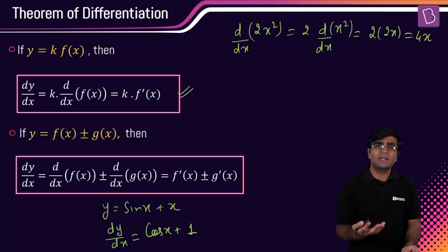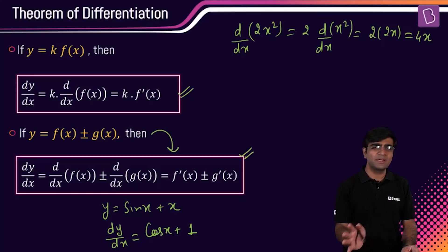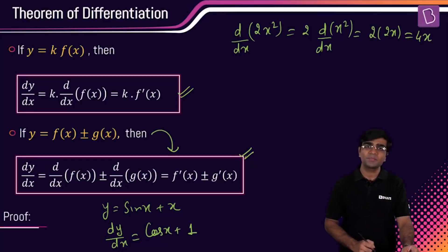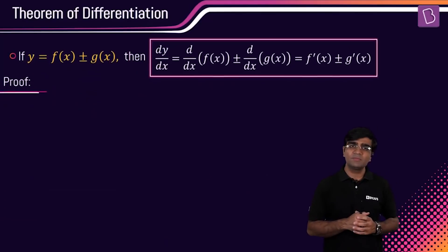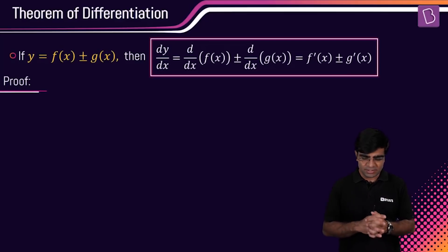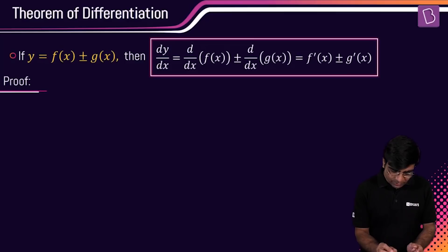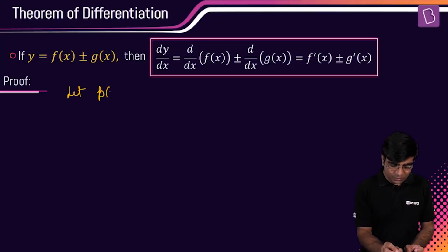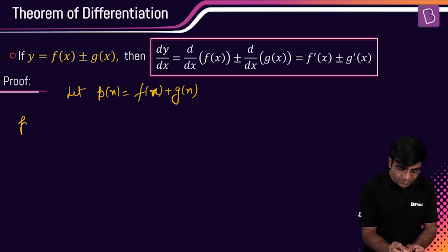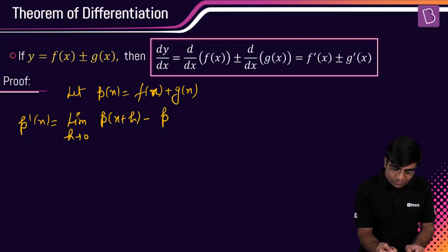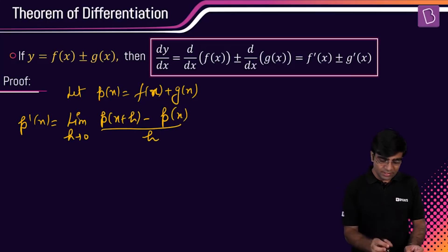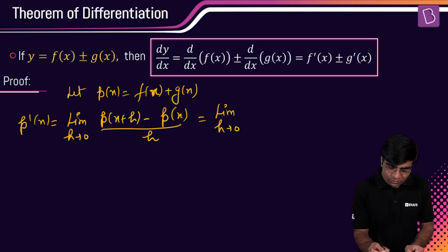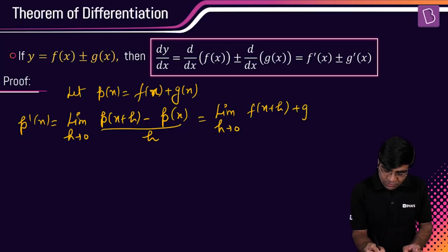Now a quick proof of where this theorem comes from. Let p(x) = f(x) + g(x). If I want the derivative of p(x), that is: limit as h tends to 0 of [p(x+h) − p(x)] / h. Since p(x) = f(x) + g(x), p(x+h) becomes f(x+h) + g(x+h).